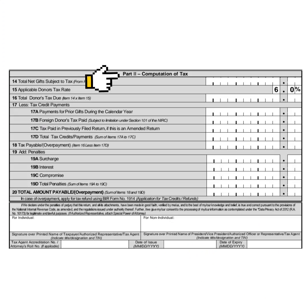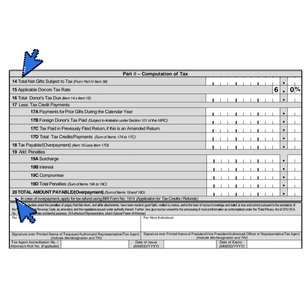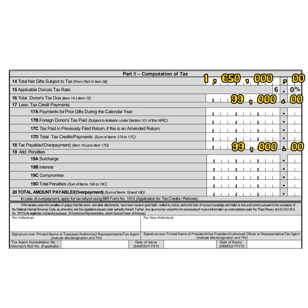Part 2: Computation of Tax. This refers to Item Numbers 14 to 38, which are about the computation details. The details can be readily found on your ONETT computation sheet.